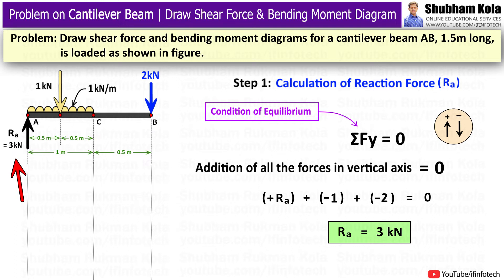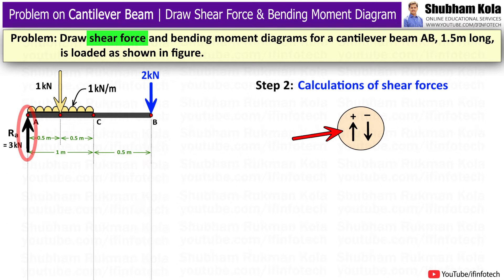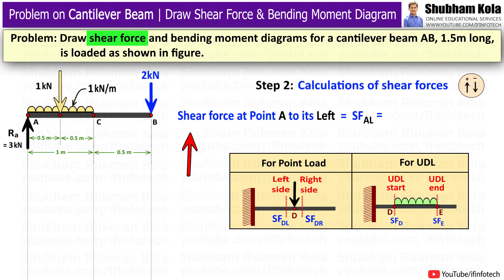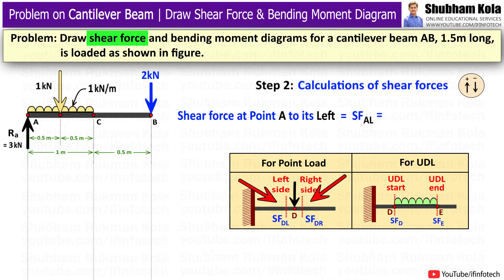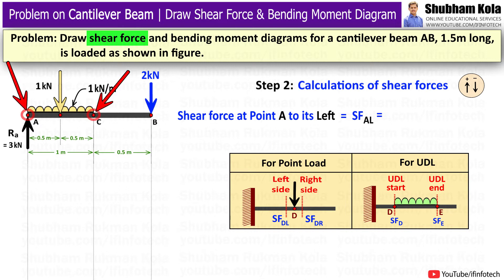With the calculated value of Ra, I will now calculate the shear force values at all points of the beam. For shear force calculations, the sign convention is: upward forces are positive and downward forces are negative. I will start shear force calculations from the left-hand side of the beam. For a cantilever beam, when calculating shear force at a point load, calculate values for both the left and right sides of that point. For UDL, calculate shear force at the start and end points of the UDL — that is, at point A and point C.